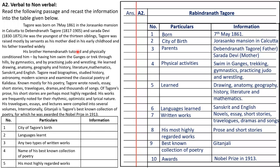Question 6A2 is verbal to non-verbal. Read the following passage and recast the information into the table given below. The passage is about Rabindranath Tagore. A table is given with particulars and information. You have to give a title also — I have given Rabindranath Tagore, or you can write Life of Rabindranath Tagore.